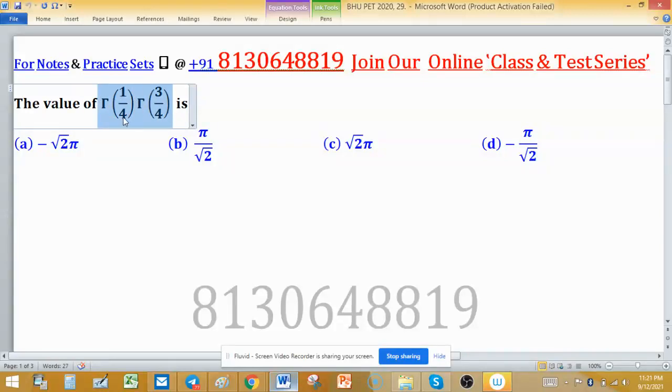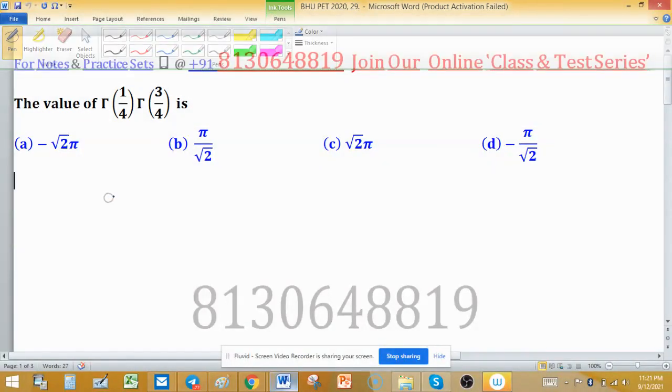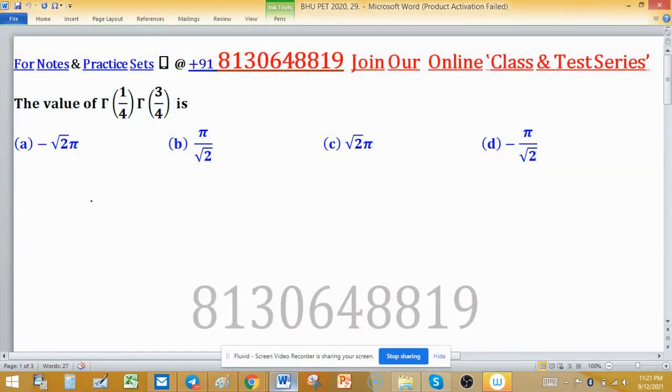The value of the product of gamma 1/4 and gamma 3/4 is asked, with four options. We have to find this value. Note that this is gamma x—not f, it is gamma. Gamma x and gamma 1 minus x equals π upon sine πx.